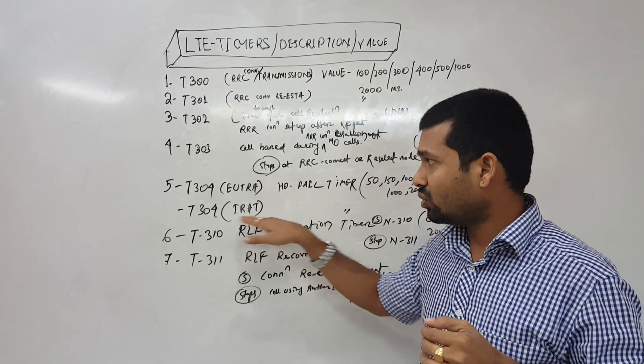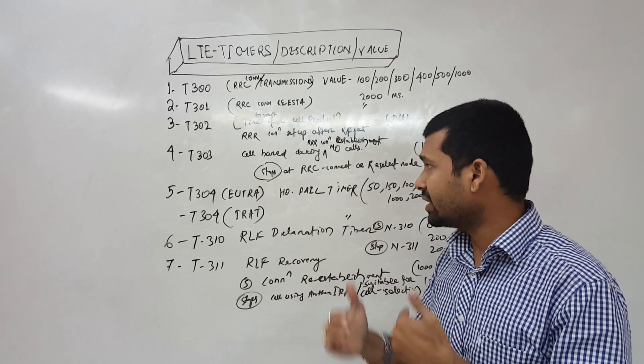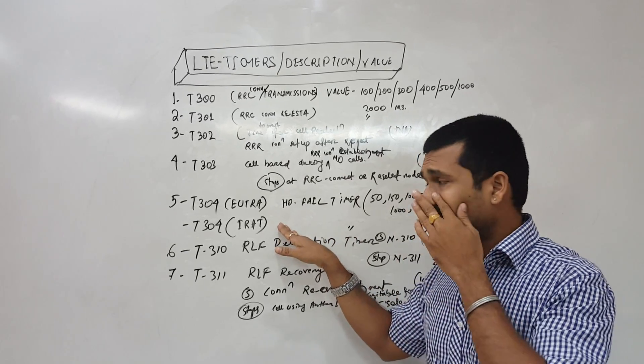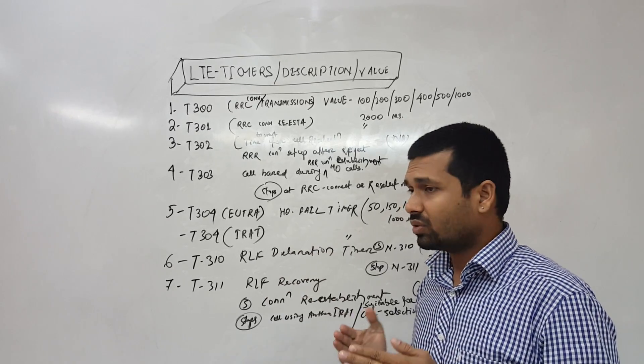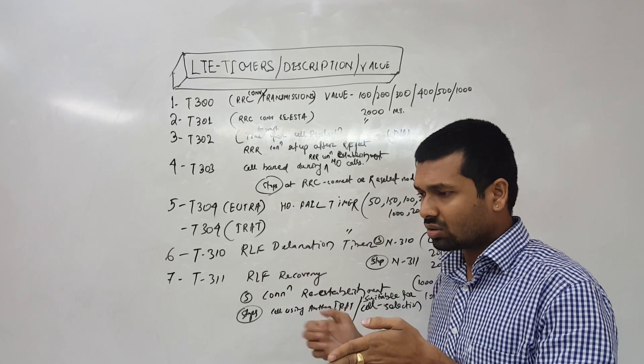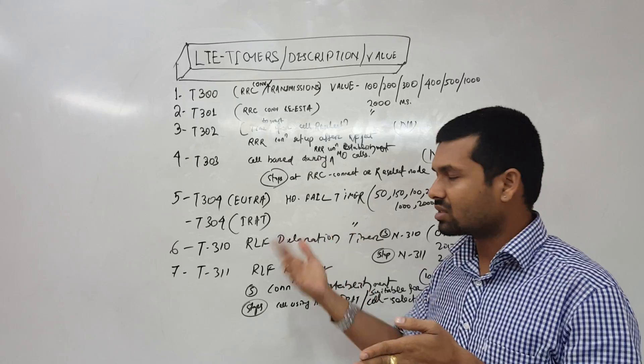Then T304 for IRAT, UTRA. For within the same LTE network or the same frequency or another frequency, this was intra radio access technology. When we start the reconfiguration and when the reconfiguration message or clearance is happening, or it is not happening and it is getting rejected or something.